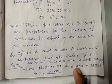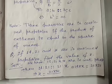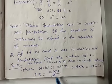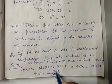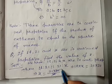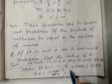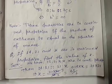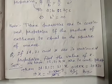14 को eliminate करने पर, x = 441/14 = 63/2. यह x का final answer है।